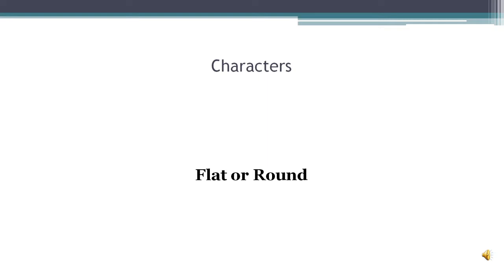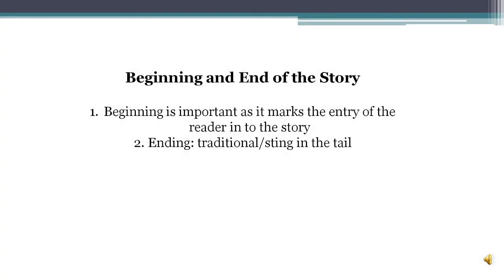It's very important to look at the beginning and the end of a story. The beginning is important because it marks the entry of the reader into the story and should be attractive to arouse interest. Similarly, the ending should be logical and convincing. The ending of most traditional stories is of the closed type, meaning all complications find a resolution. But modern stories remain open-ended — you will not get a sense of closure. Sometimes the writer uses the method called 'sting in the tail,' where exactly the opposite of what you expect happens at the end.